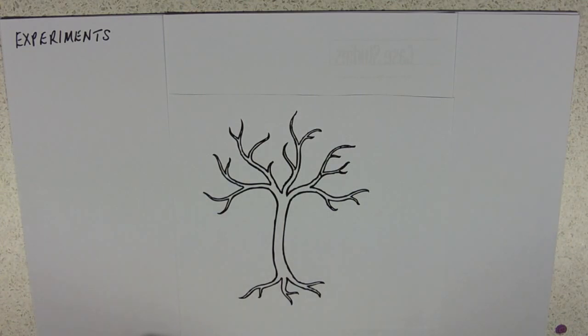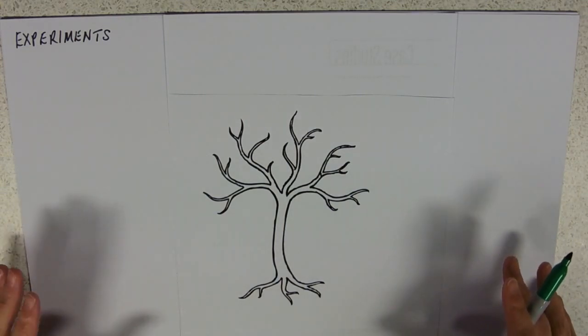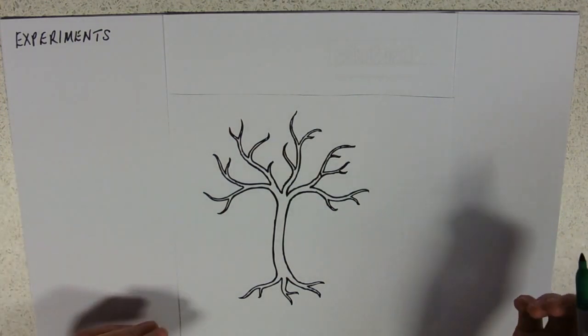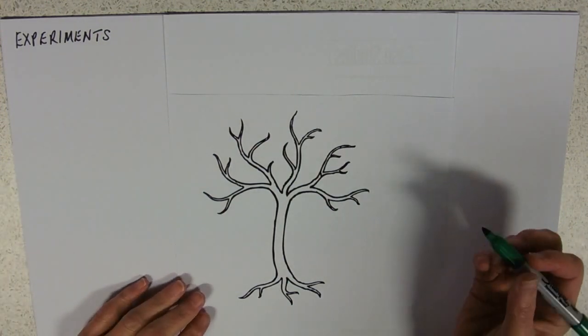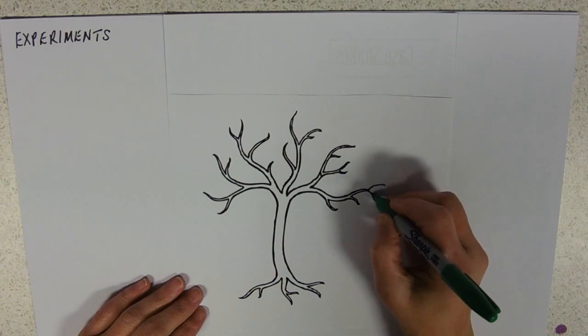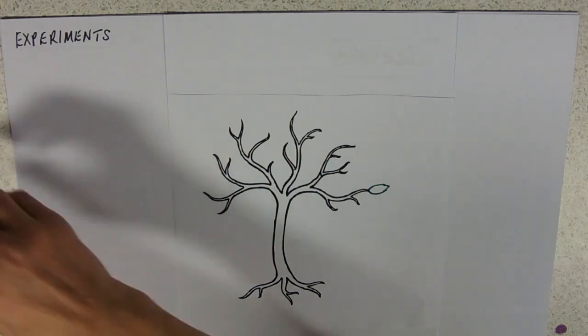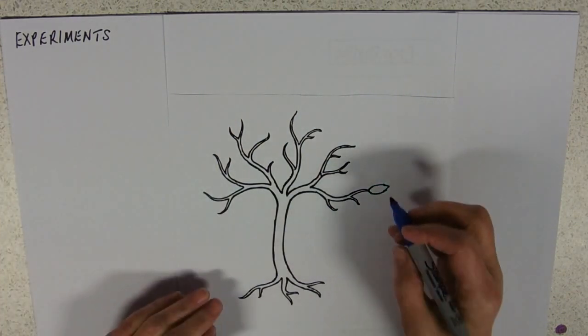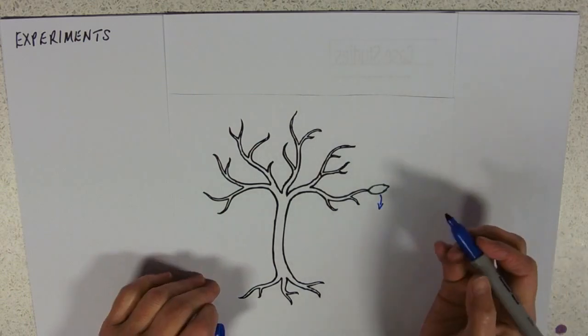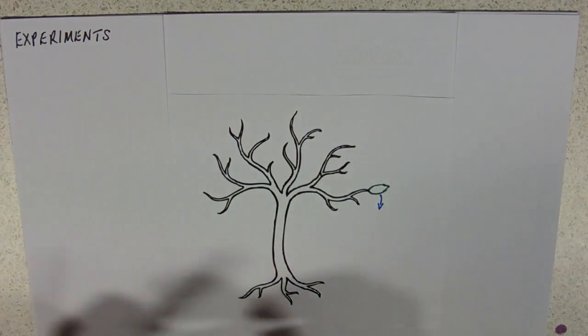So I just want to walk you through the experimental evidence that transpiration happens like we think it does, and then we'll have a look at the photometers. So, I'll just draw a little leaf on here, and you'll remember that what is actually causing the water to move is this idea of evaporation and diffusion out of the leaf,